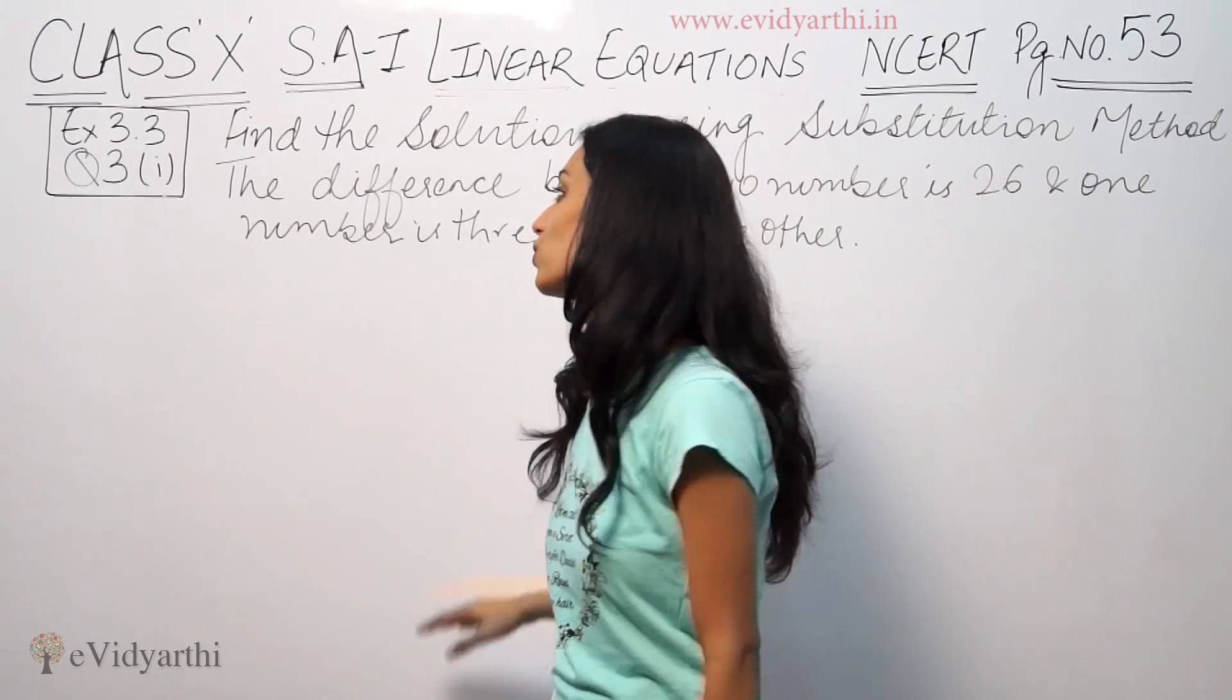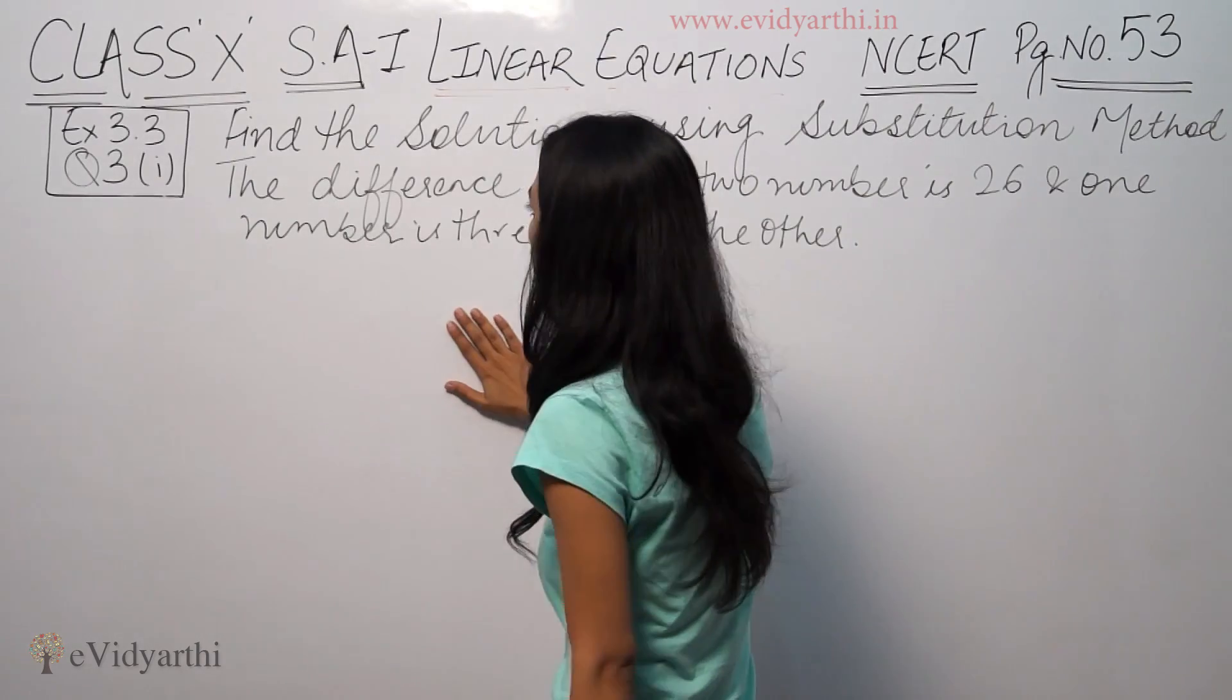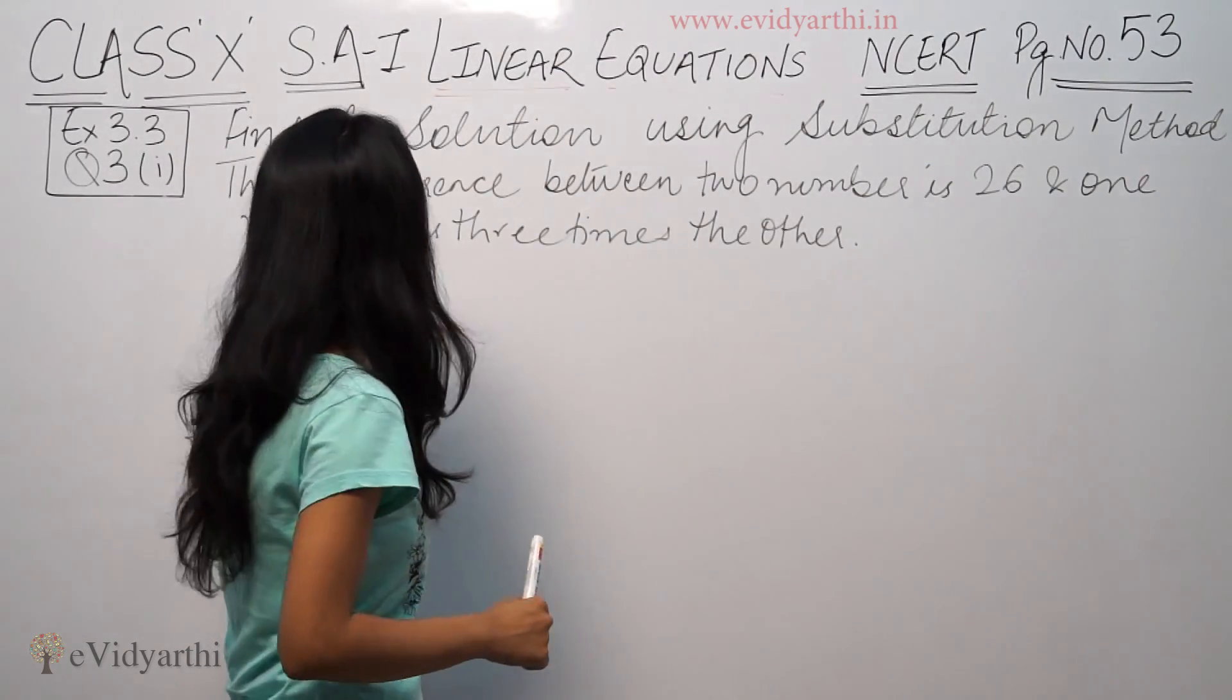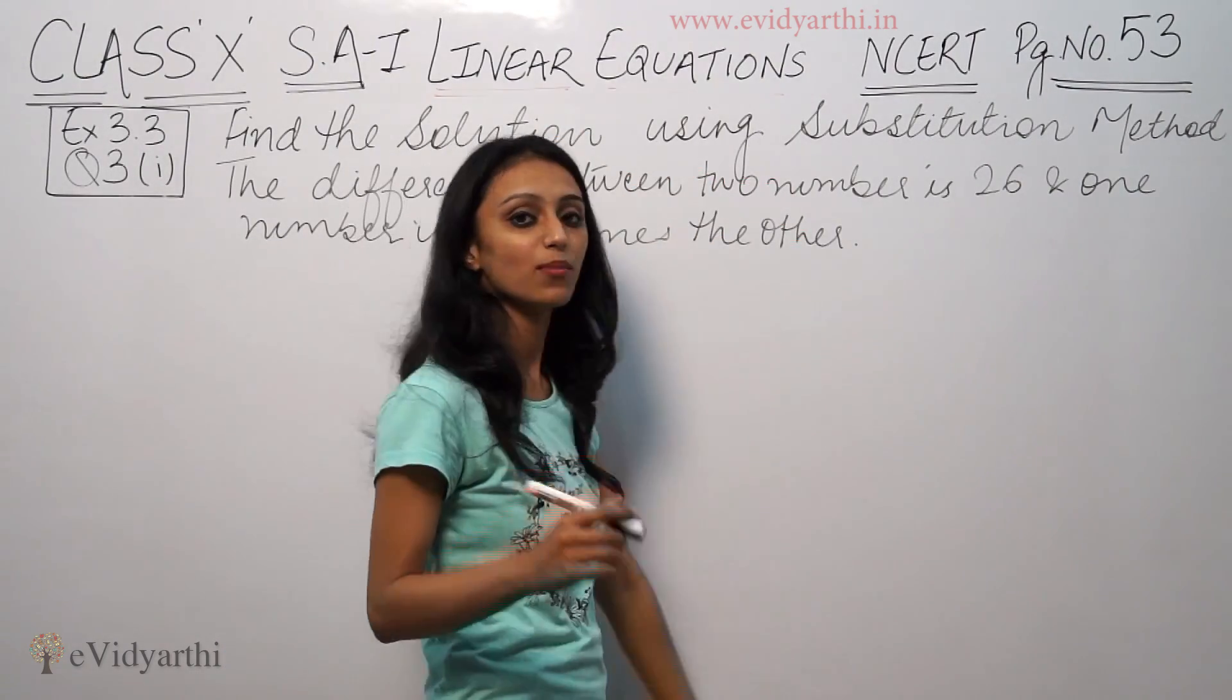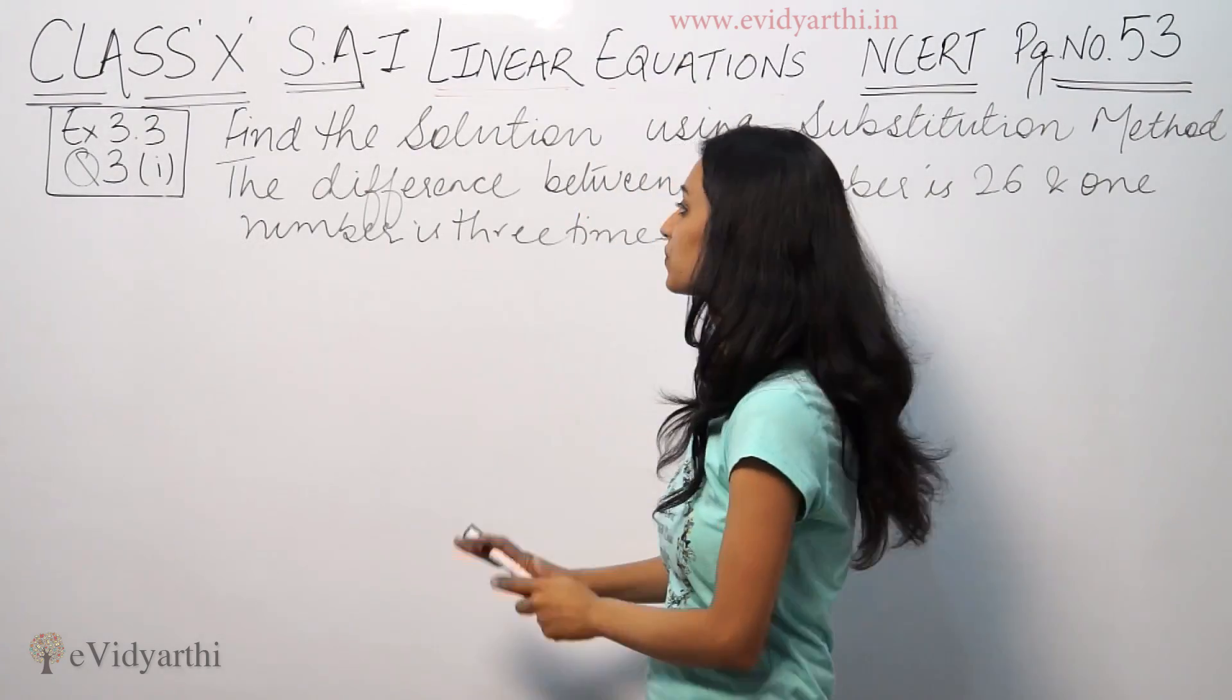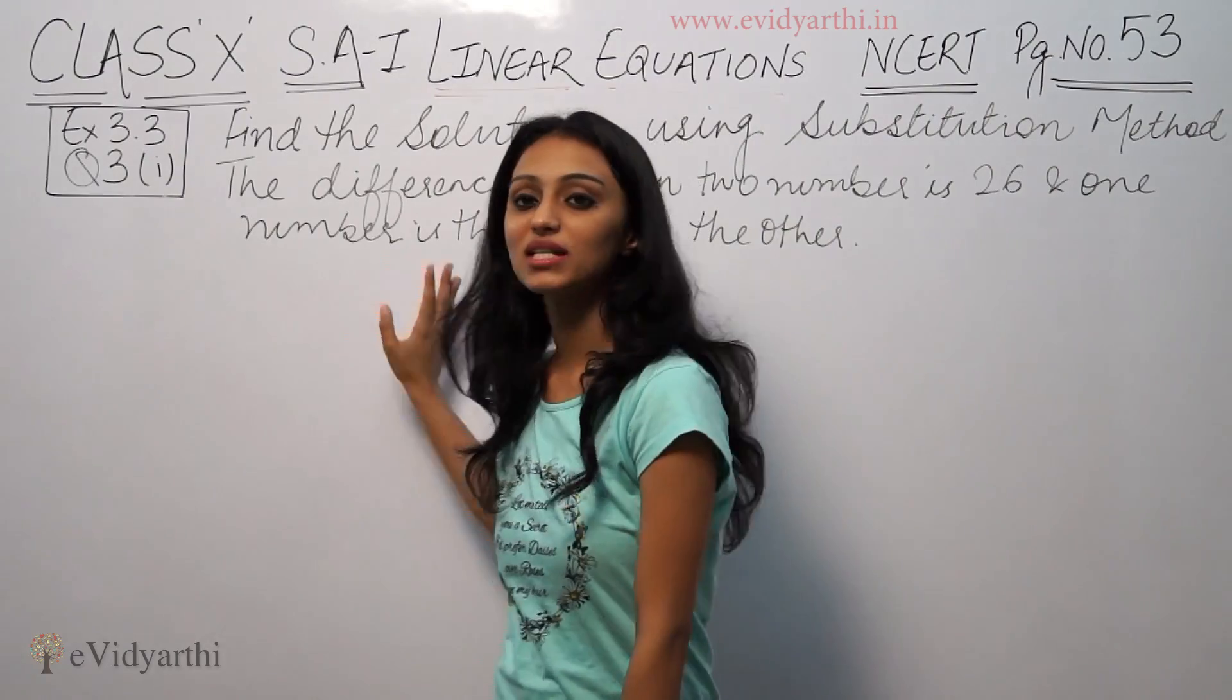This type of question is what we're going to solve here. This is basically a word problem from exercise 3.3 for your exams. Find the solution using substitution method. The difference between two numbers is 26 and one number is 3 times the other.